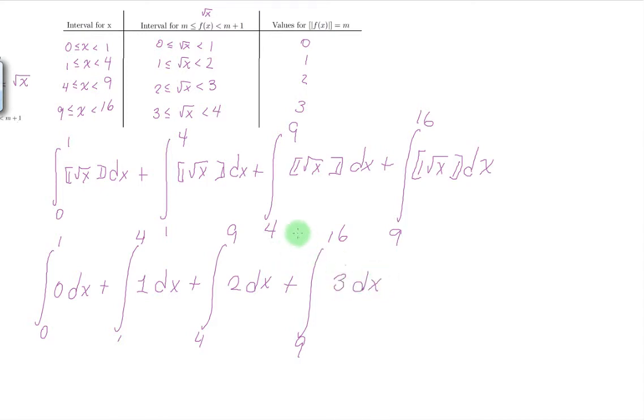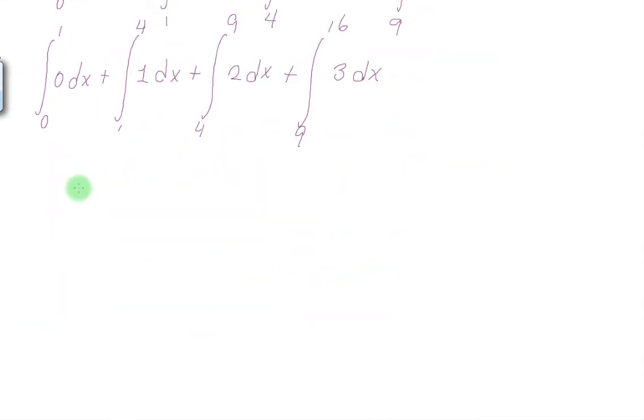Now we evaluate the integral. This becomes 0 times x evaluated from 0 to 1 plus 1 times x evaluated from 1 to 4, plus 2x evaluated from 4 to 9, plus 3x evaluated from 9 to 16.